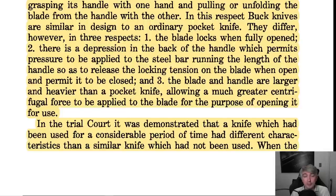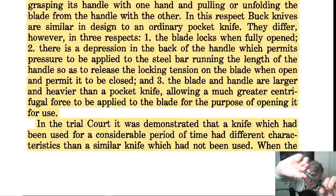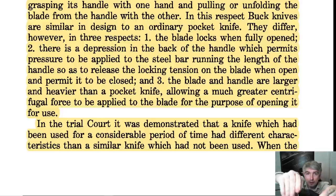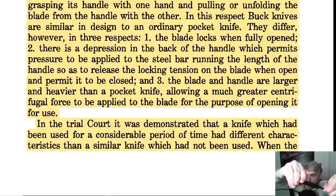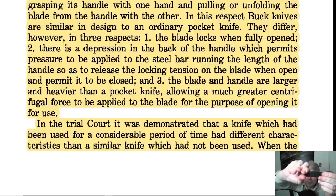There is a depression in the back of the handle which permits pressure to be applied to the steel bar running the length of the handle, so as to release the locking tension on the blade when open and permit it to be closed. The blade and handle are larger and heavier than a pocket knife, allowing much greater centrifugal force to be applied for opening. This knife here has a little piece at the back which can be depressed — once it's open, you don't want it closing on your fingers. Pressing it releases the lock and allows the blade to close again.